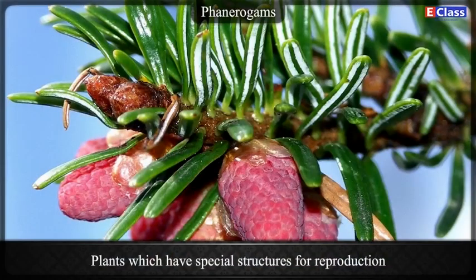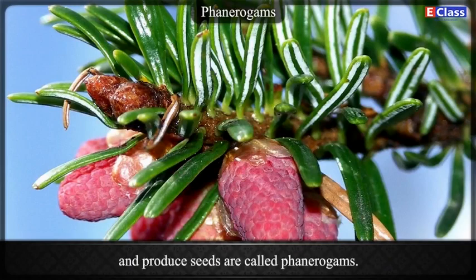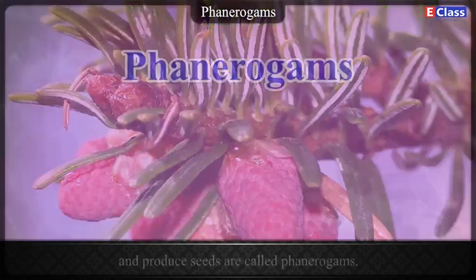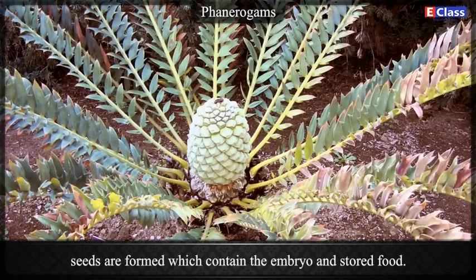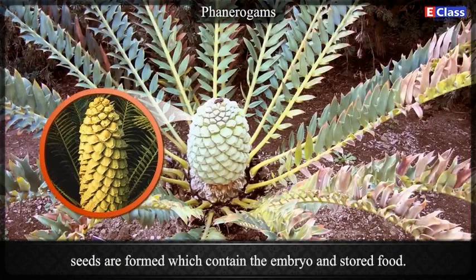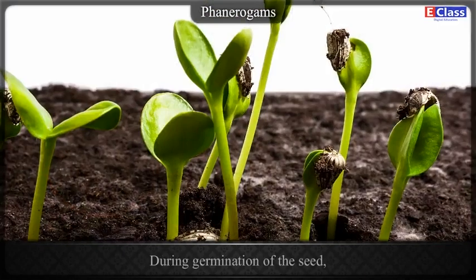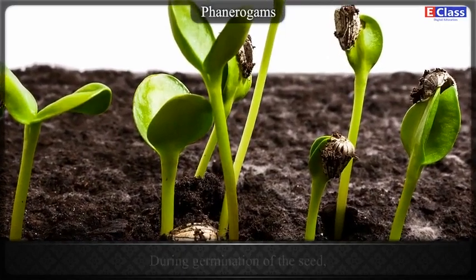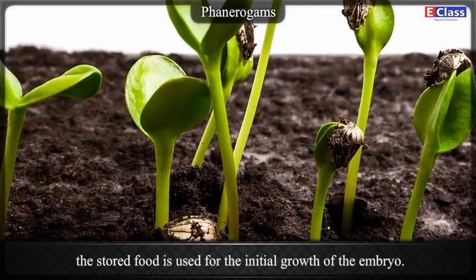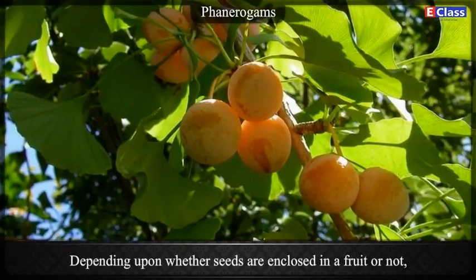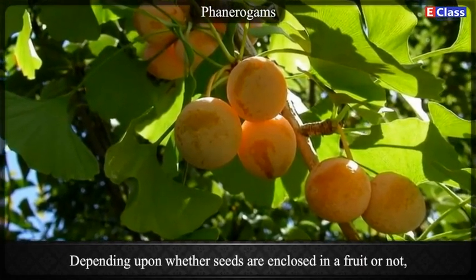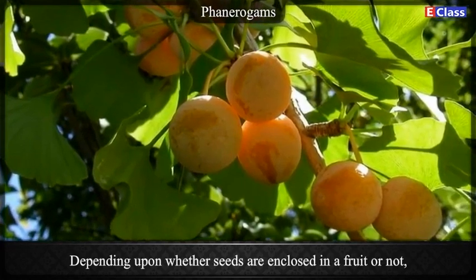Phanerogams: Plants which have special structures for reproduction and produce seeds are called phanerogams. In these plants, after the process of reproduction, seeds are formed which contain the embryo and stored food. During germination of the seed, the stored food is used for the initial growth of the embryo.